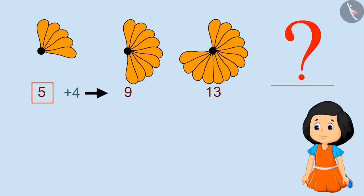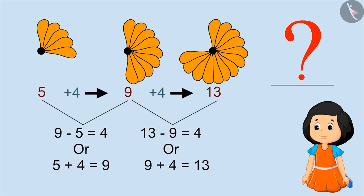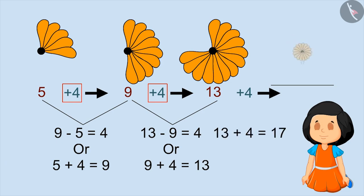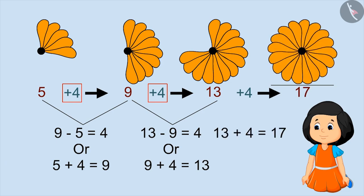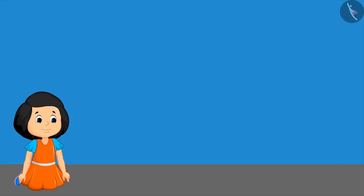First five, then nine, then 13. These numbers have a difference of four. So the next number will be 13 plus 4, that is 17. This means Muni will put 17 petals in the next round. Look, Muni has completed the flower now. Let's give Muni some number patterns.